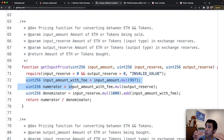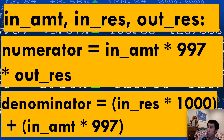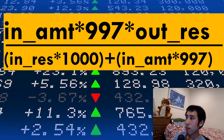I found it really difficult to read this code in its original form, so I converted it into a PowerPoint slide and pseudocode. The function takes in three variables: input amount, input reserve, and output reserve — abbreviated as in/out amount and reserve. The numerator is equal to input amount multiplied by 997 multiplied by the output reserve. The denominator is equal to input reserve multiplied by 1000 plus the product of input amount and 997.